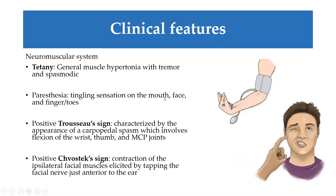When we have low levels of calcium and high levels of phosphate, calcium's role in the neuromuscular system is affected. Low calcium leads to hyperexcitability of the nervous system, resulting in a lot of muscle contraction, hypertonia, tremors, and spasmodic episodes — a state we call tetany. This can be tested using two clinical signs: the Trousseau sign and the Chvostek sign.